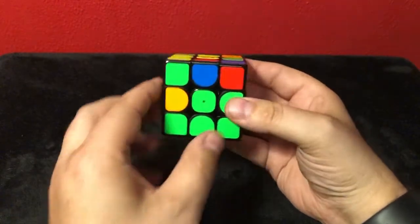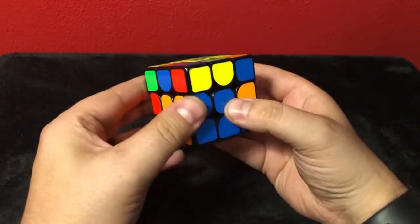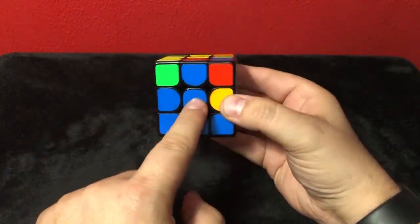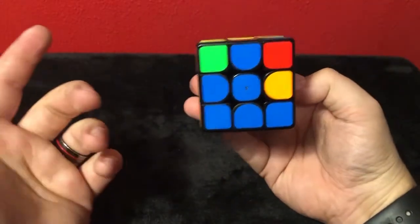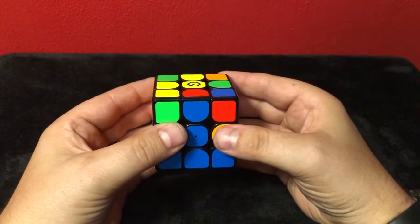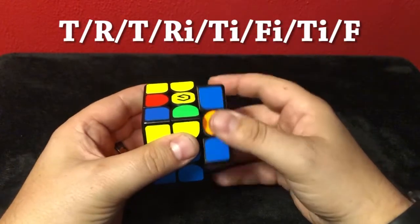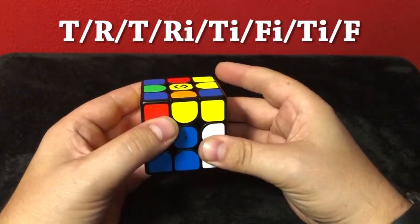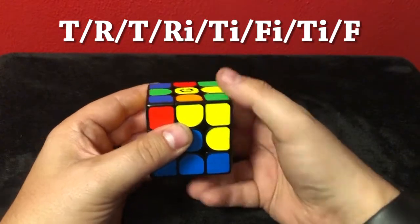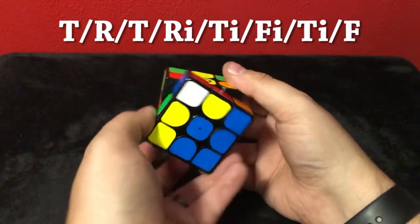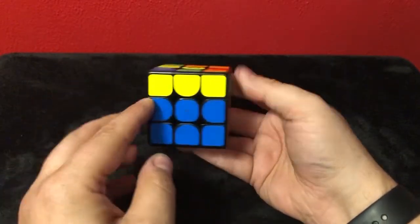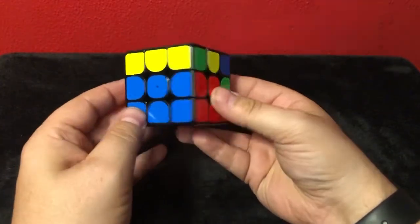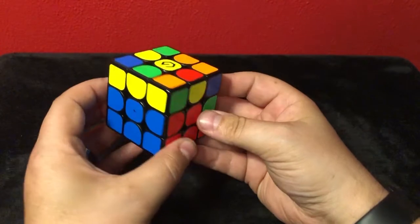Blue, red. Alright, let's find the blue. Let's twist it around till we find blue. That lines up. Red's over here. So this needs to go to the right. Hey, we're gonna do the same algorithm. So we're gonna do it again. Top, right, top, right inverted, top inverted, front side inverted, top inverted, and front side normal. Bam! Look at that! Let's find another one.